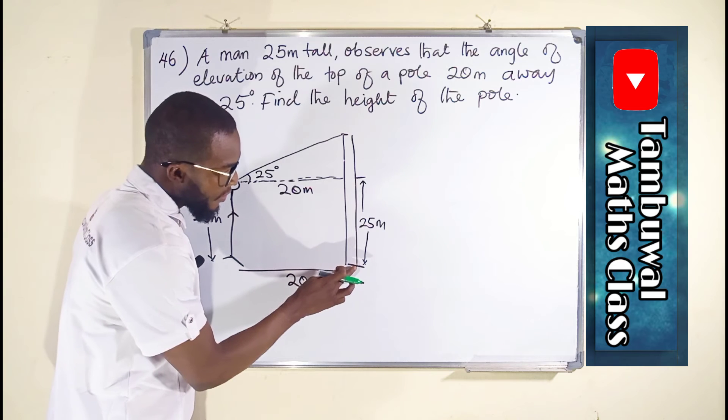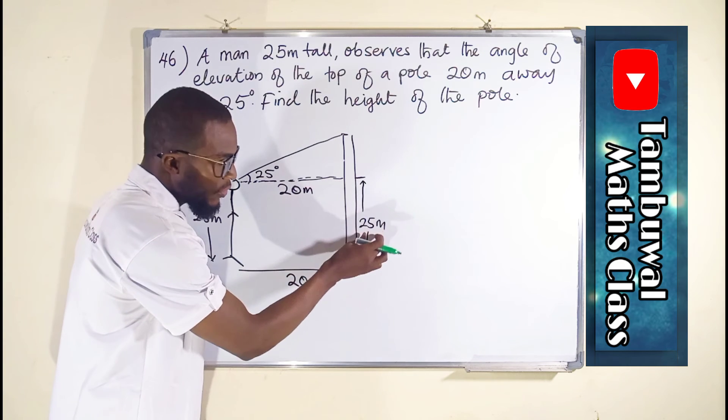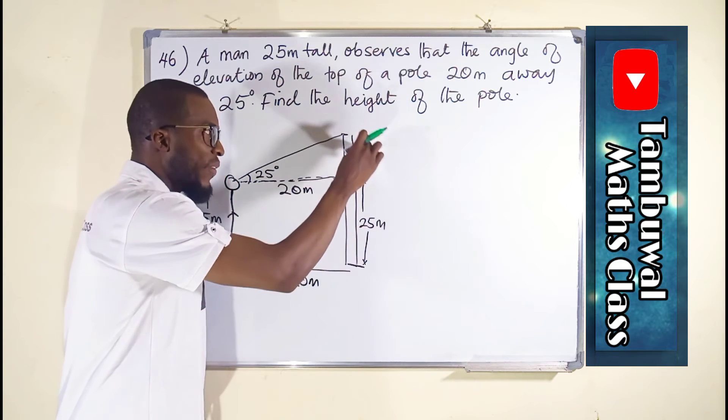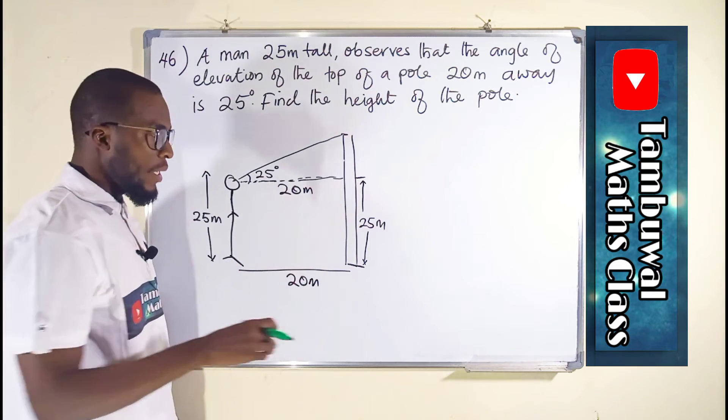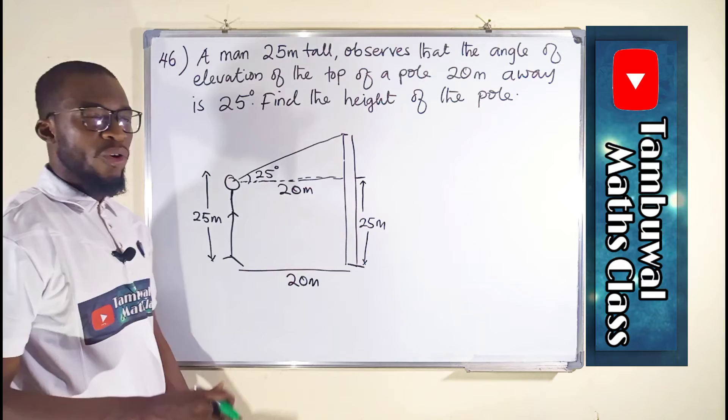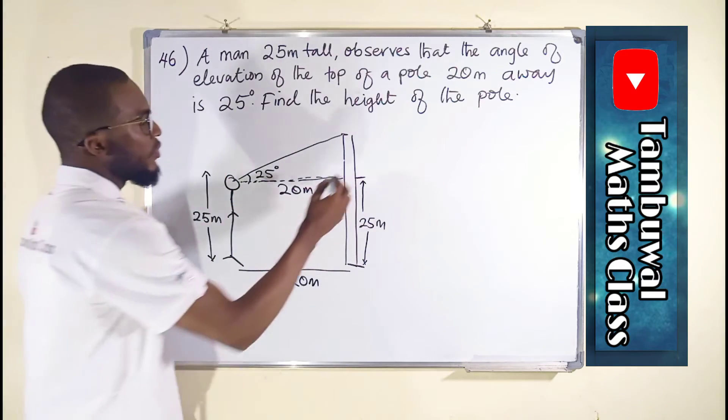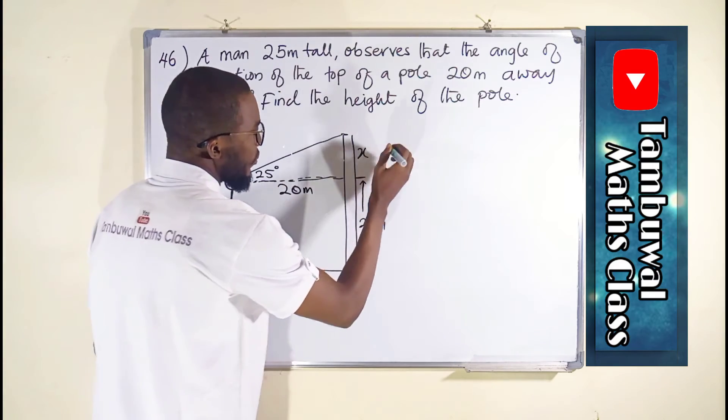So we have seen that the distance between this point to this point is 25. We want to find the distance from this point to this point. Whenever we obtain, we add it to 25 to obtain the total length of the pole. So since it is unknown, we can represent it with X.